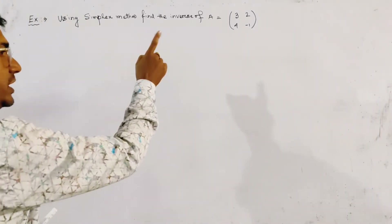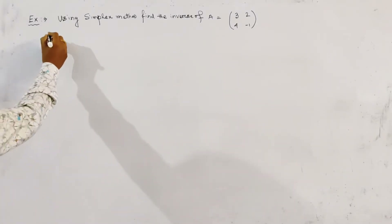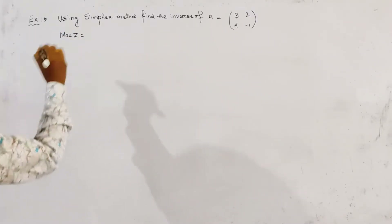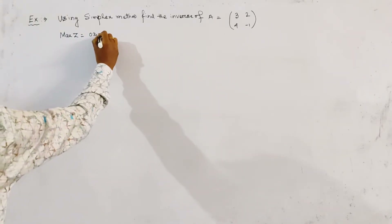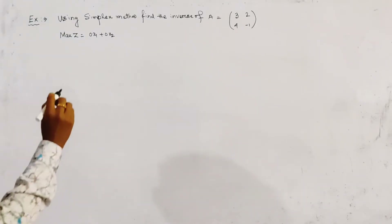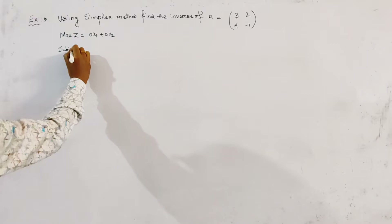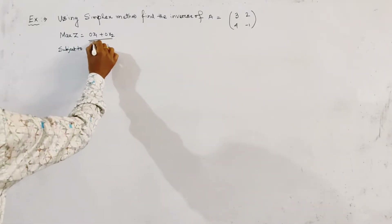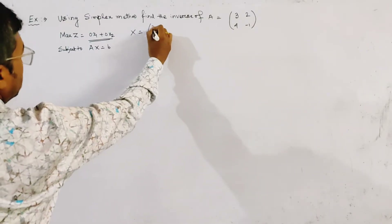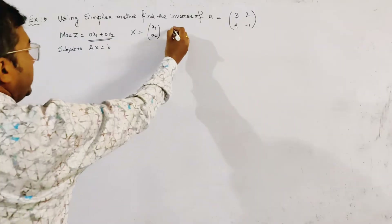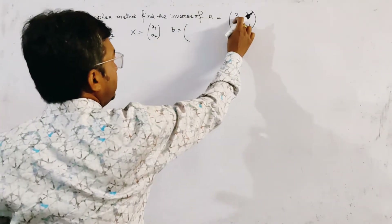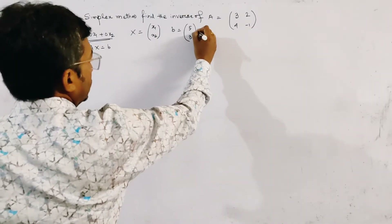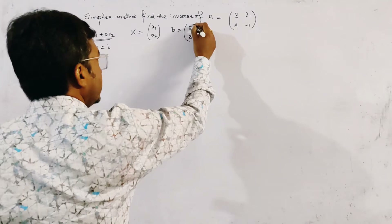To transfer it into a linear programming problem, we get an auxiliary objective function given by max z = 0x1 + 0x2, subject to Ax = b. From the objective function, x is x1 and x2, and generally b is taken to be the sum of the elements of each row: 3 + 2 = 5 and 4 - 1 = 3. We may take another value of b as required.